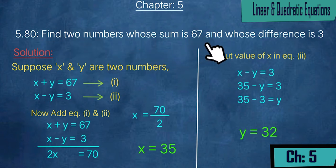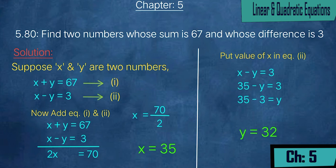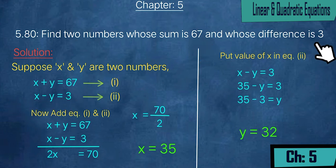Next, exercise 5.80: find two numbers whose sum is 67 and whose difference is 3. Suppose x and y are the two numbers. Then x + y = 67 (equation 1) and x - y = 3 (equation 2).